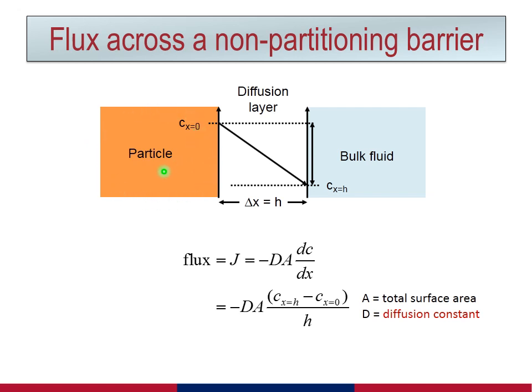Because D and A are positive numbers, Fick's first law is written with a negative sign, to denote the fact that diffusion occurs from where the concentration is highest to where the concentration is lowest.